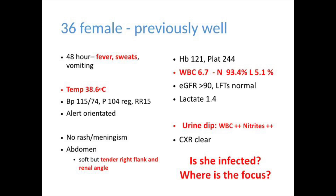If you look down at the bottom right of the slide, the first question I ask myself is: is this an infection and where is the focus? Looking at the information we've got, it's most likely by far that it is an infection. She has fever and sweats, a documented temperature of 38.6, tenderness in her right flank and renal angle, a white cell count of 6.7 but with a high neutrophil percentage of 93.4% suggesting bacterial infection, and she's got a positive urine dip. So it's not difficult to conclude she's infected, with the focus in the urinary tract with likely upper tract involvement on the right. A common clinical presentation.